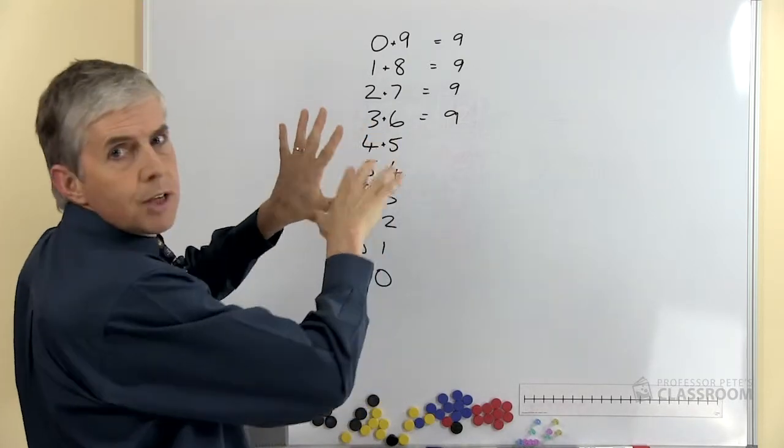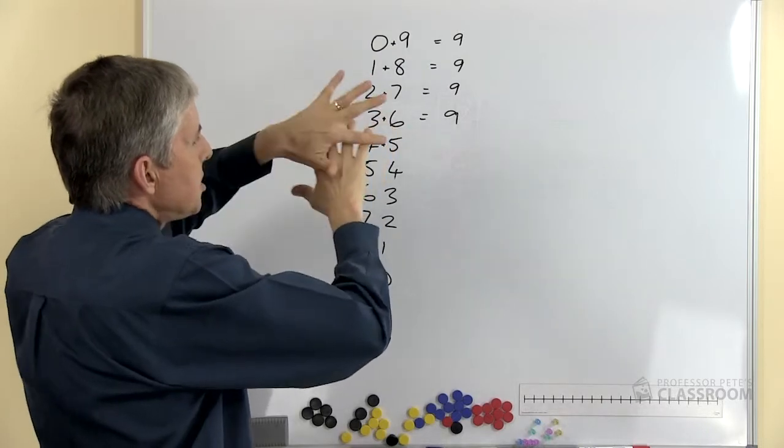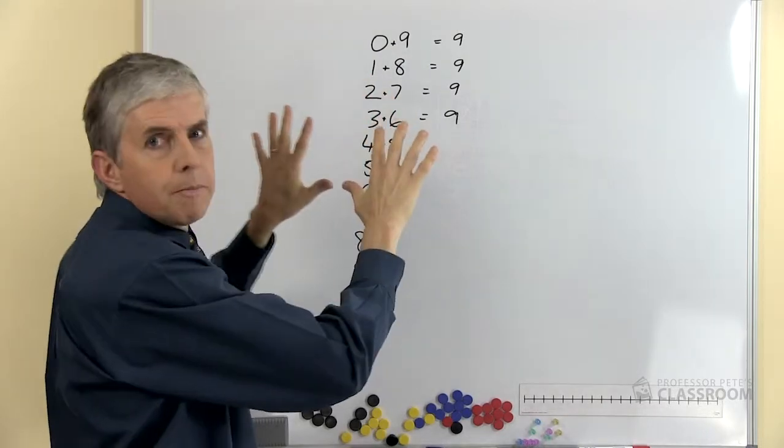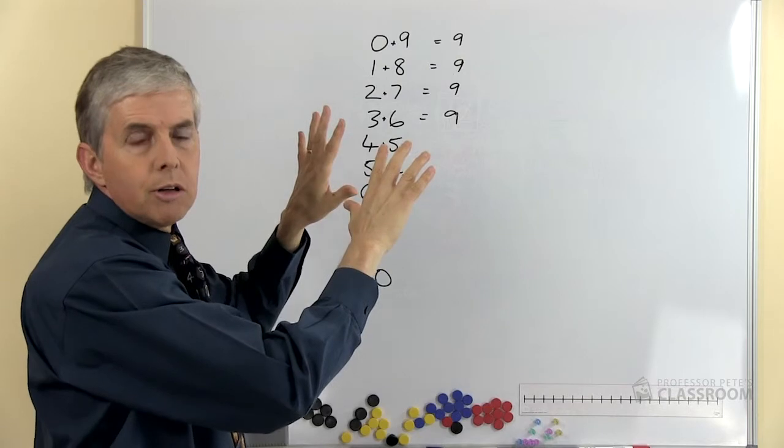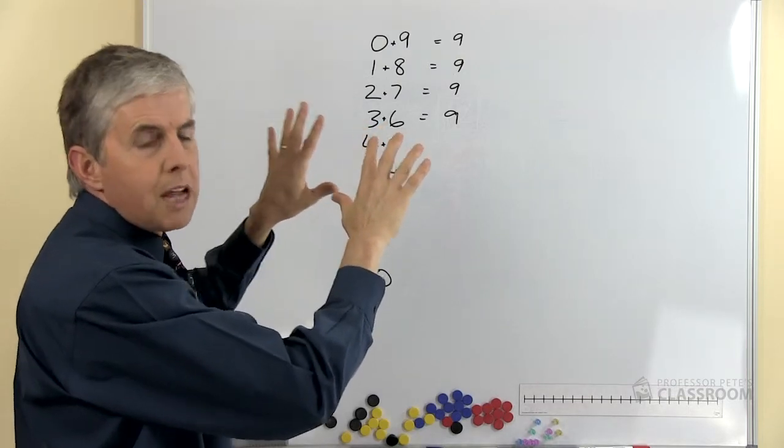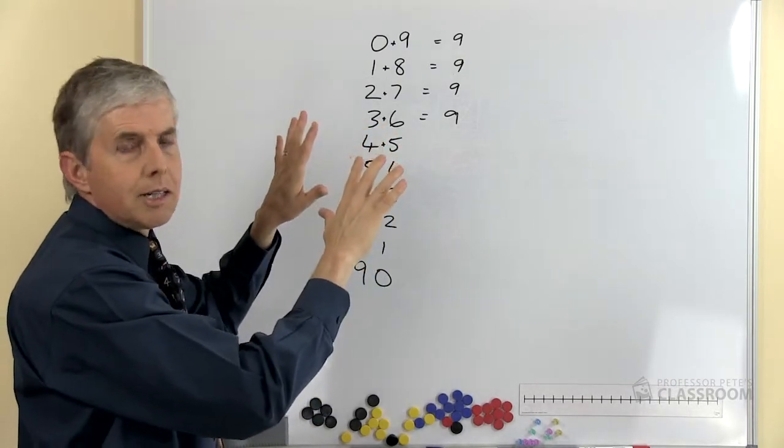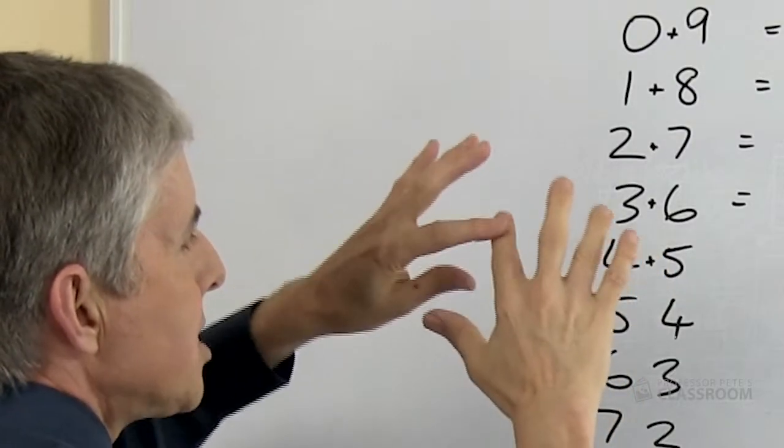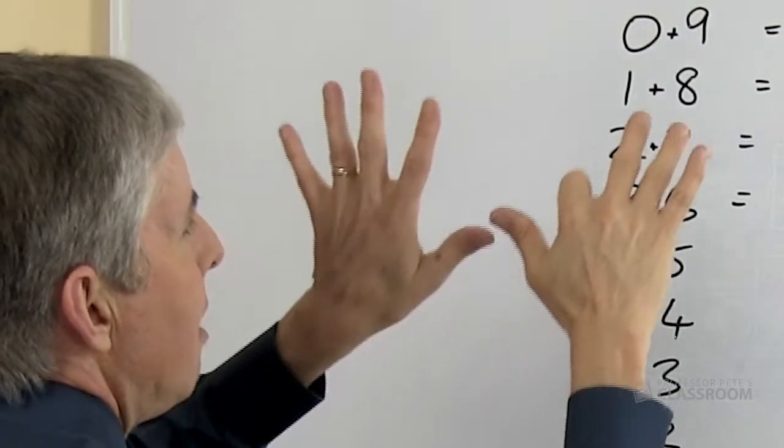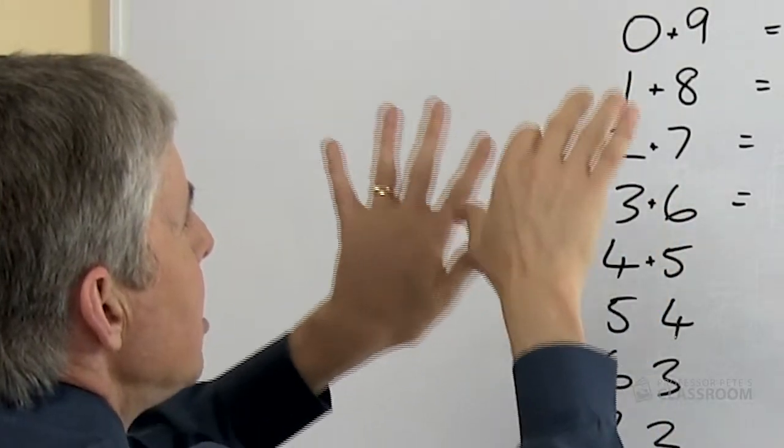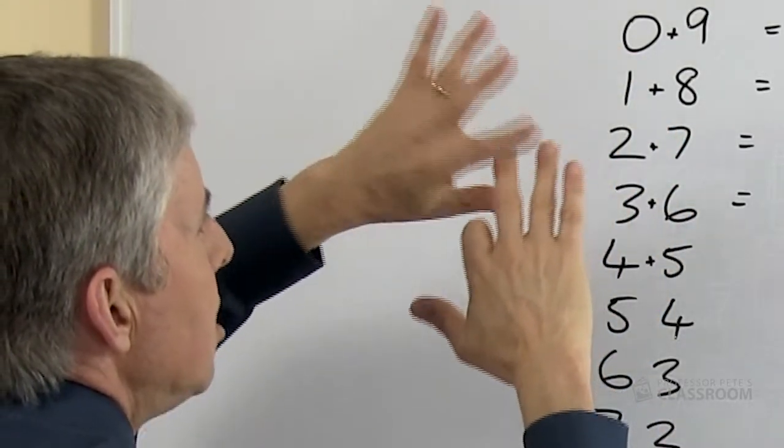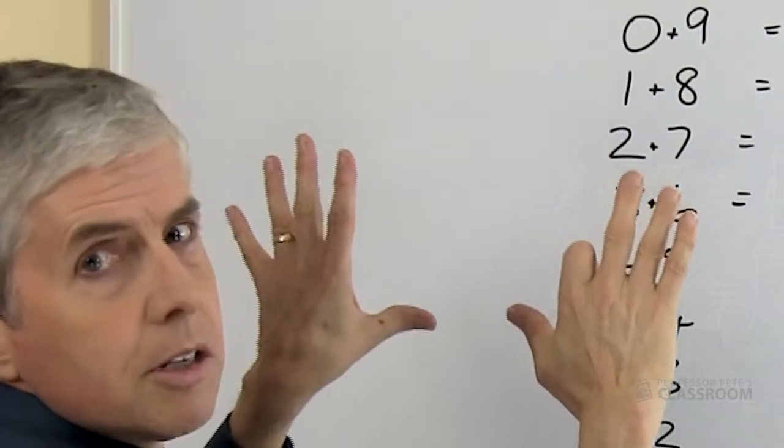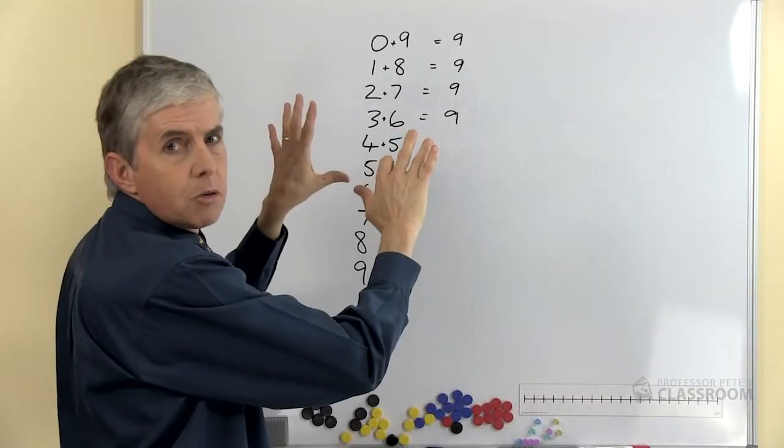Imagine that these fingers are numbered from one to ten, from left to right. Find the number that you're going to multiply by nine and put that finger down. So I might say nine times seven. Here's finger number seven. There's five here, six, seven. Put that finger down. On this side I have six fingers. On this side I have three fingers. Nine times seven equals sixty-three.